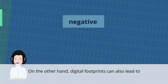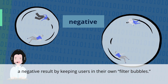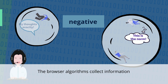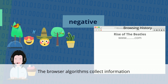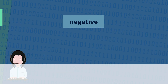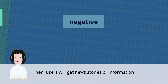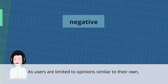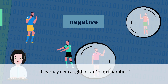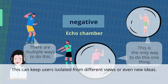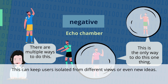On the other hand, digital footprints can also lead to a negative result by keeping users in their own filter bubbles. The browser algorithms collect information which is based on users' preferences or browsing history. Then, users will get news stories or information that they agree with or prefer. As users are limited to opinions similar to their own, they may get caught in an echo chamber. This can keep users isolated from different views or even new ideas.